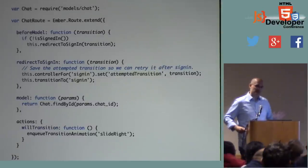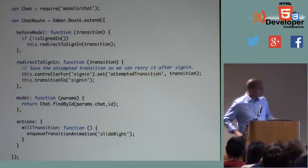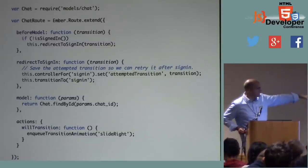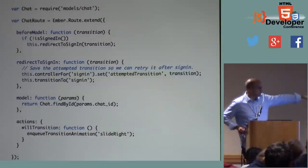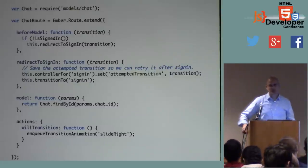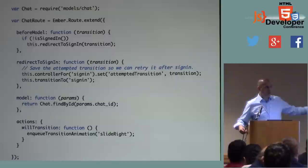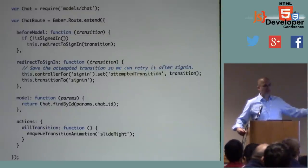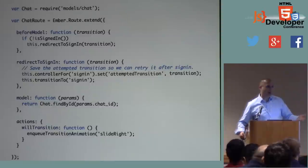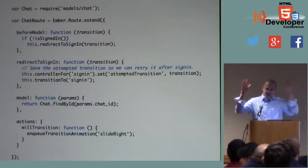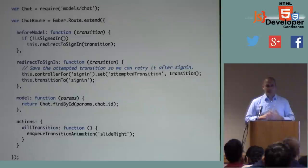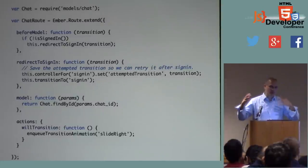This is why the router is one of the gems of Ember — it makes this easy and manageable. In my sign-in controller, I set attempted transition to the transition object, then transition to sign-in. When sign-in is successful, just retry the transition. It doesn't need to know the URL — all it knows is I've got this transition object encapsulating the state of what the user was trying to do. Just rerun it because now we believe they should be able to.